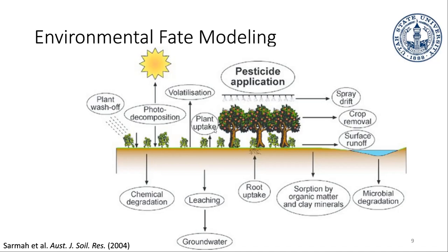Once the pesticide reaches the environment, there are a bunch of different processes. The plant can absorb some of the chemical; it can make its way deeper into the soil; it can run off into nearby water. Volatilization — essentially just evaporation into the air — can also occur, and then it can move around in the atmosphere. If it rains, the chemical can be washed off the plant into the soil or into surface or groundwater. And the chemical can also just be decomposed — broken down by sunlight.